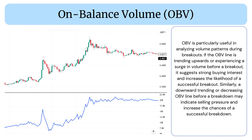If the OBV line is trending upwards or experiencing a surge in volume before a breakout, it suggests strong buying interest and increases the likelihood of a successful breakout. Similarly, a downward trending or decreasing OBV line before a breakdown may indicate selling pressure and increase the chances of a successful breakdown.